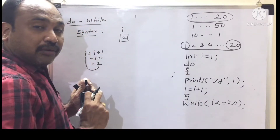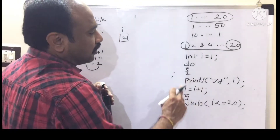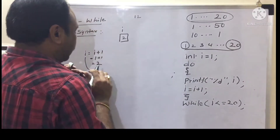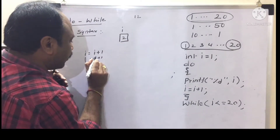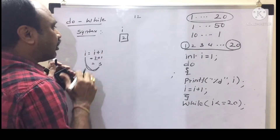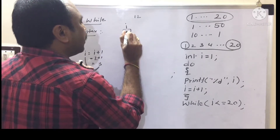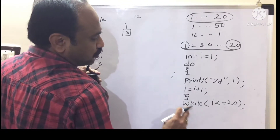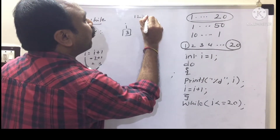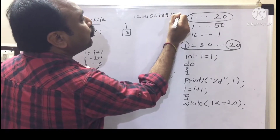This do-while is called a loop statement — it will repeat. Again we go: do, print %d with i value 2 — 2 is printed. Then i = i + 1, i becomes 3. Check while: 3 less than 20 — condition true, 3 is printed. Like that, 4, 5, 6, 7, 8, 9, 10 — up to 20 is printed.